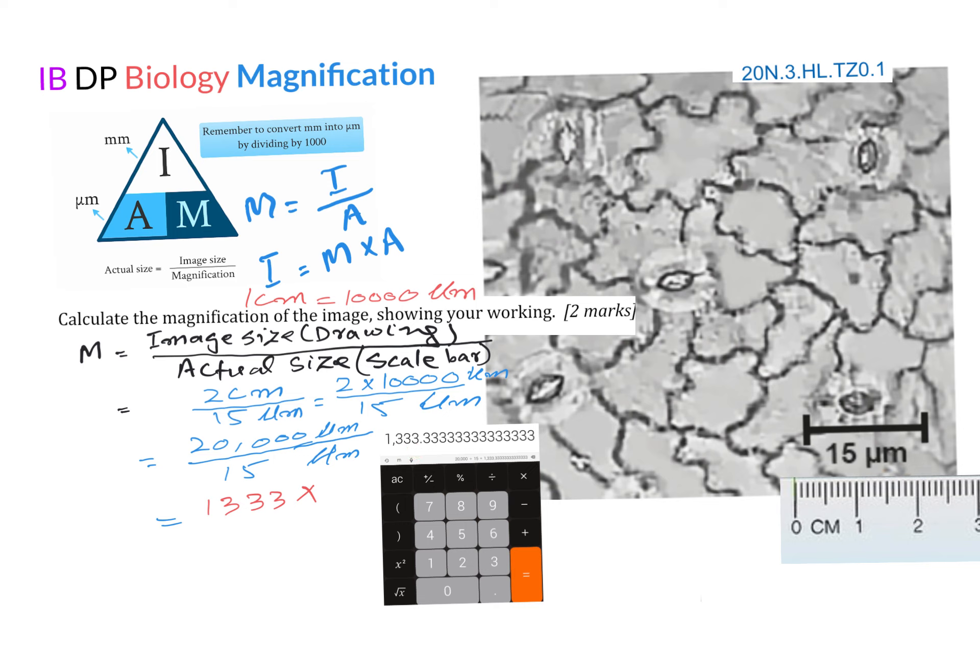So when we do this, two multiplied by 10,000 divided by 15, both units are the same. Then I use the calculator here and I got the answer 1,333.3 something. So that is my answer, which is the magnification.